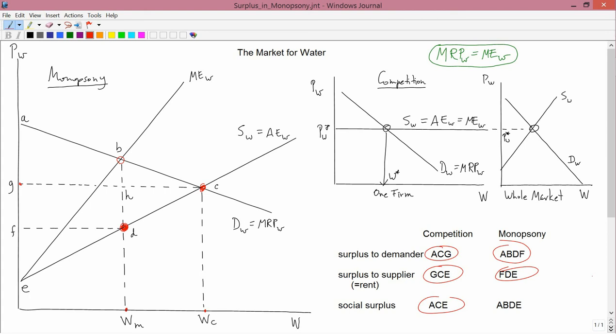Let's see how much. It's the area above the supply curve, below the price line. The supply curve is ED, the price line is FD. So the area between those is FDE. So that explains the surplus to the supplier.